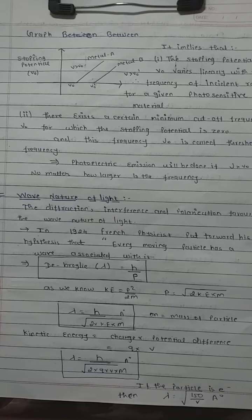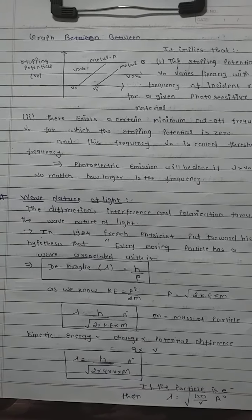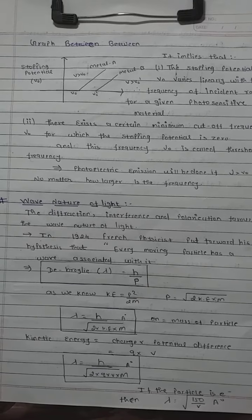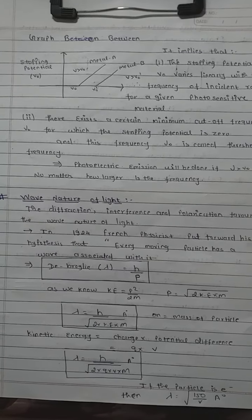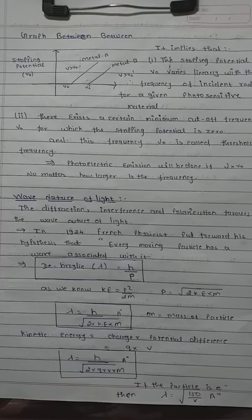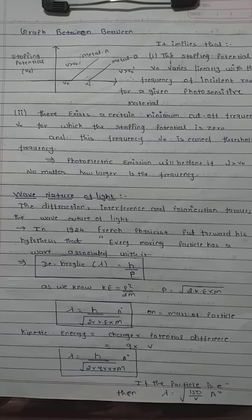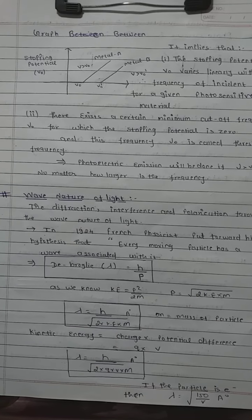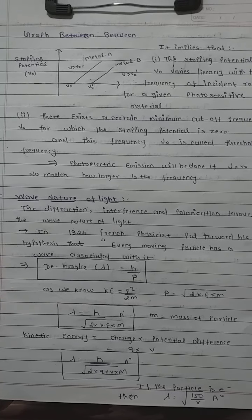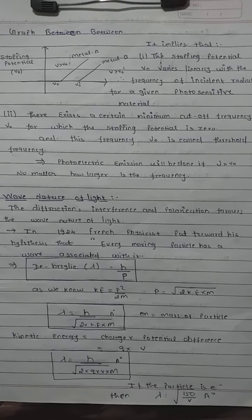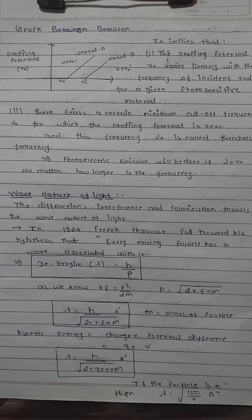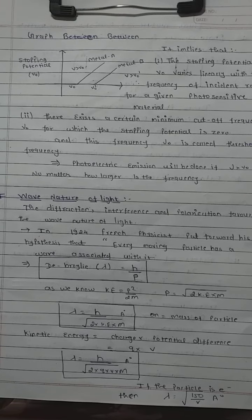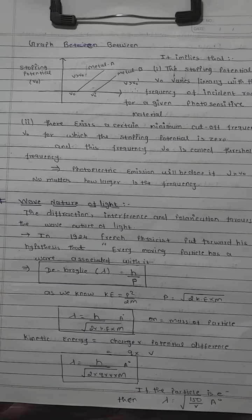जो experiments हमने देखे वो light के particle nature को favor कर रहे थे। Parallelly, diffraction, interference, और polarization के experiments ने light के wave nature को support किया। In 1924, French physicist de Broglie put forward his hypothesis that every moving particle has a wave associated with it — यानि हर moving particle की अपनी एक wave होती है।